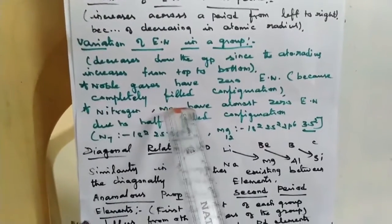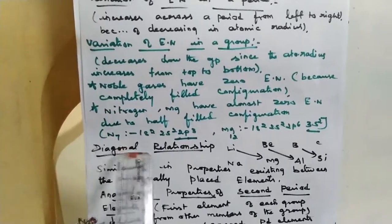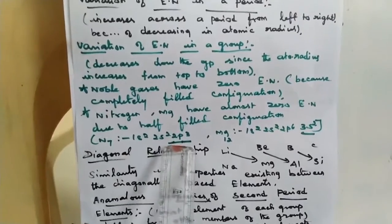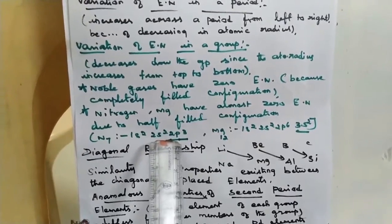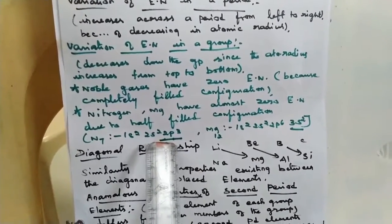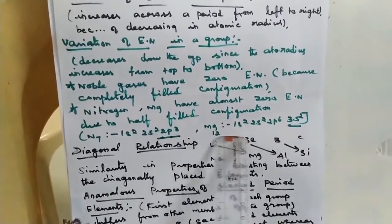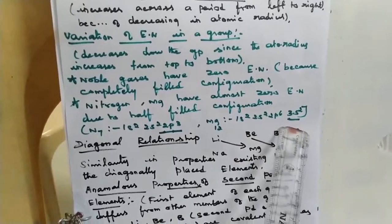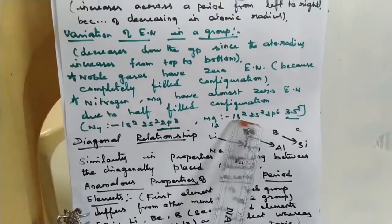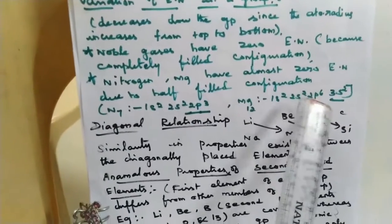Nitrogen and Magnesium also have almost zero electronegativity. Nitrogen has atomic number 7 with configuration 1s², 2s², 2p³ — a half-filled configuration. Magnesium has atomic number 12 with configuration 1s², 2s², 2p⁶, 3s² — the 3s orbital is completely filled. Because of these stable configurations, they have little tendency to attract the bonded pair of electrons towards themselves.